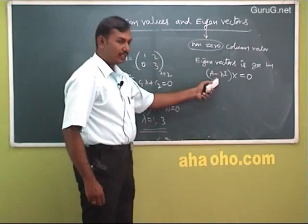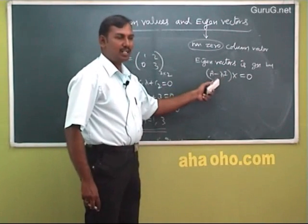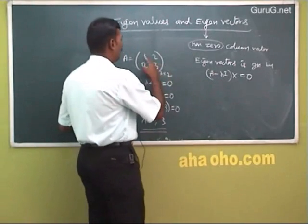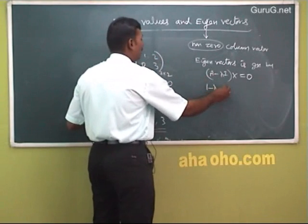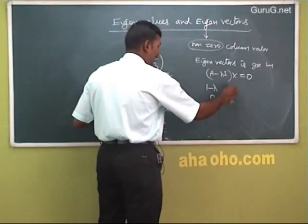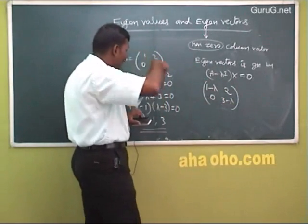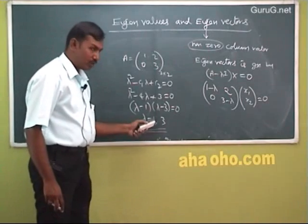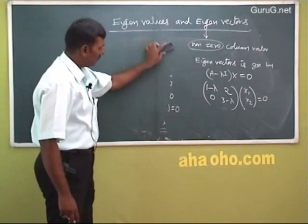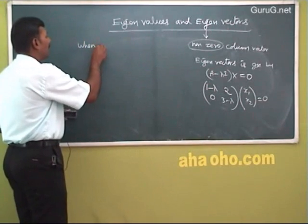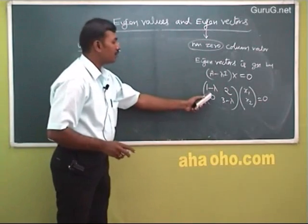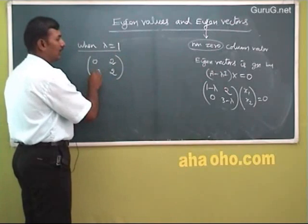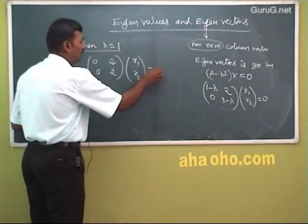For the matrix A = [1,2; 0,3], the eigenvalues are λ = 1 and λ = 3. The eigenvector equation is (A − λI)x = 0. For diagonal elements we substitute minus lambda. So we get: [1−λ, 2; 0, 3−λ][x₁; x₂] = 0. When λ = 1: [0, 2; 0, 2][x₁; x₂] = 0.